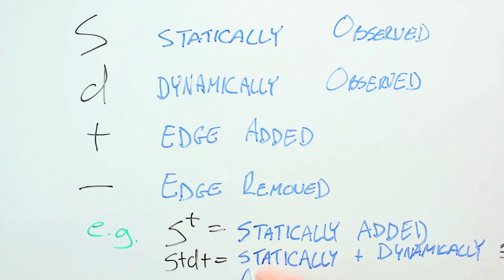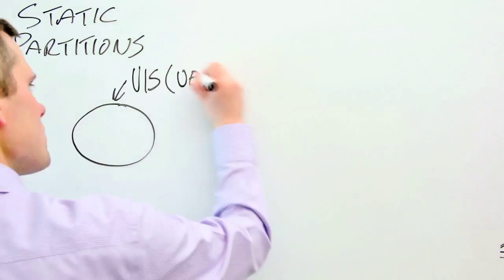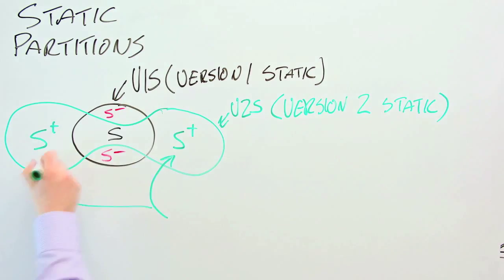A plus means that a fact was added as a consequence of a change, and a minus means that the fact was removed. By overlaying the static call graphs, we can differentiate between those elements that were statically added, removed, and were unchanged.